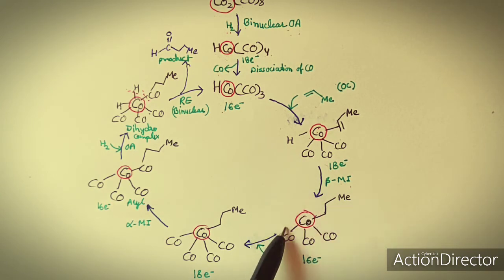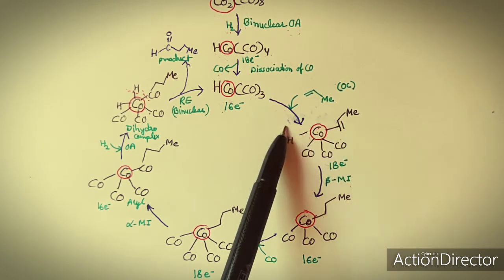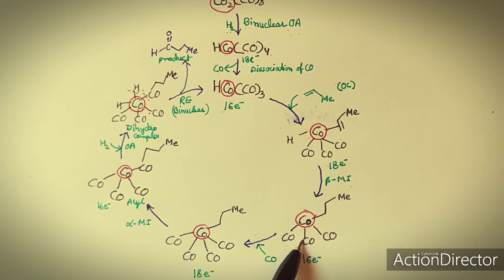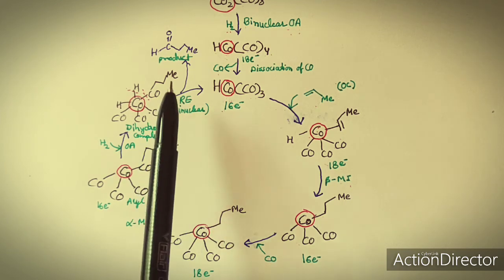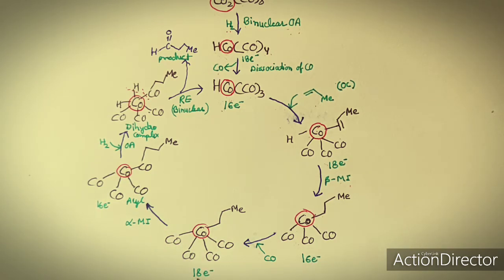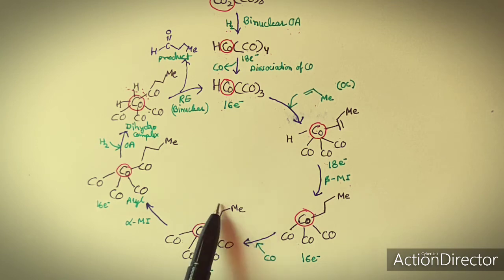After beta migratory insertion, the product has 4-coordination and is again a 16-electron system with a vacant site. The carbonyl that was previously dissociated now adds back to this molecule, making it an 18-electron system with 4 carbonyls and the reduced olefinic alkyl group.